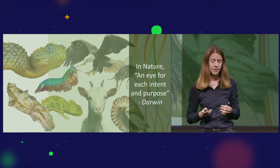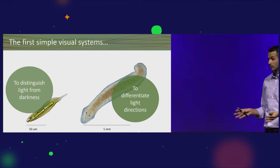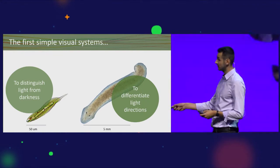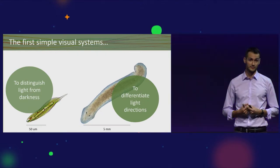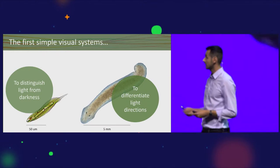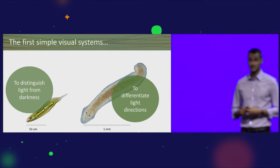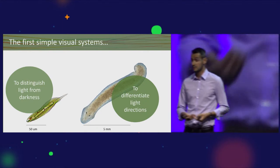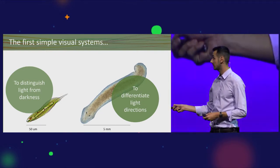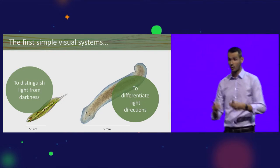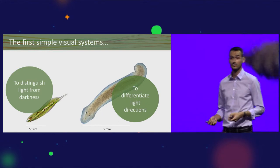Before we go into any interesting visual system, let's talk about boring ones. The boring ones would be a 50 micrometer unicellular organism that has just a bag of pigments which is photosensitive. That pigment could distinguish light from darkness, which is useful for photoperiodism. If you deepen these pigments into a hole, you can start to distinguish and differentiate light directions, maybe to follow light sources.